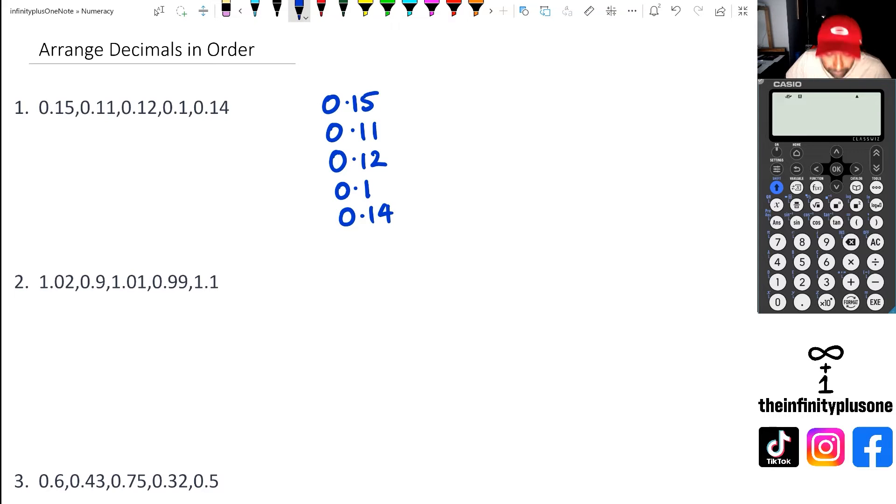Now when you look at this, remember that when it comes to decimals, if you have a number like 0.1, you could just rewrite that - it's the same thing as saying 0.10. I'm going to put that in red just to see what it is.